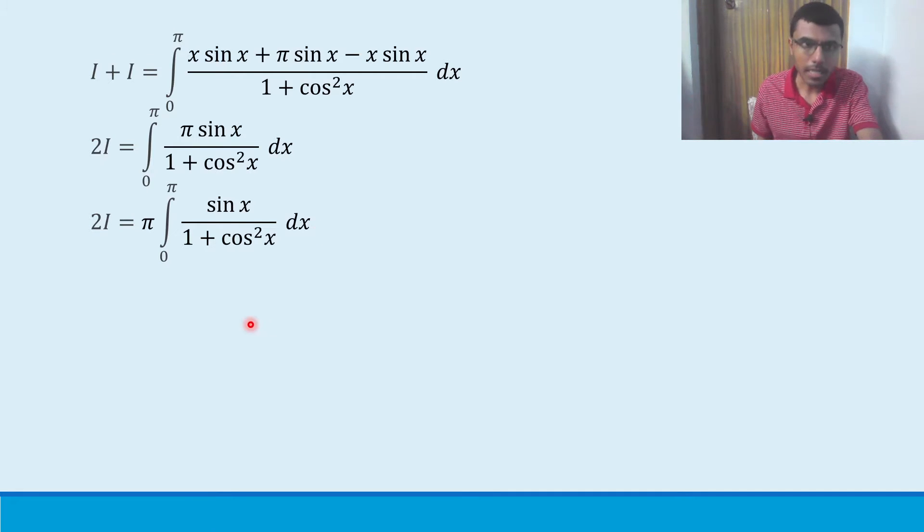It's 2I, so what I am left out with is pi sin x by 1 plus cos square x dx. Now put the pi outside. Pi is a constant. A constant can be taken outside of integration. This will be like this: pi integral 0 to pi sin x by 1 plus cos square x dx. Now send this 2 here, so I will be nothing but pi by 2 integral 0 to pi sin x by 1 plus cos square x dx. Now how to solve this question from here is I am going to use substitution method.